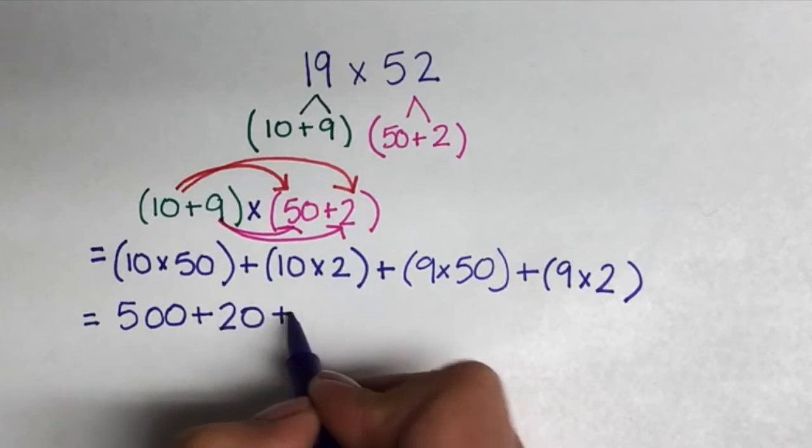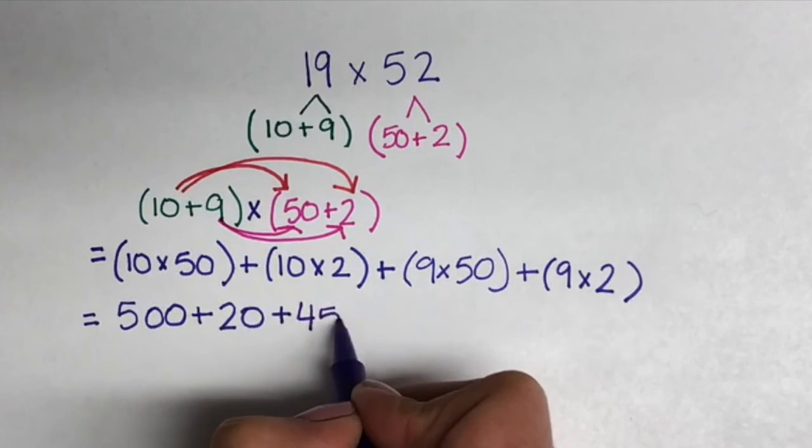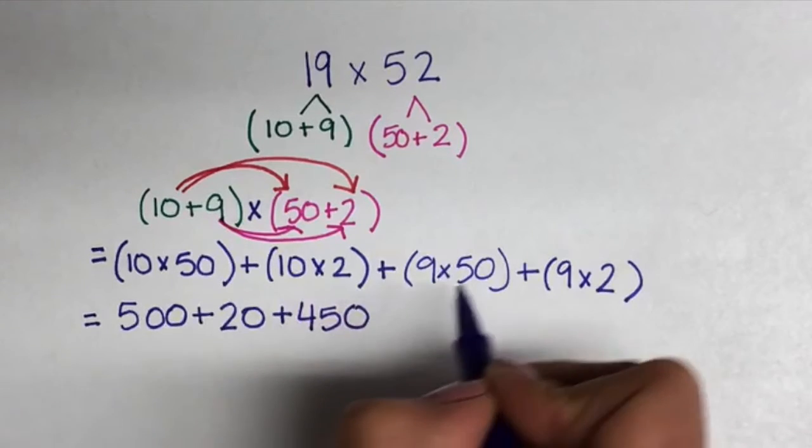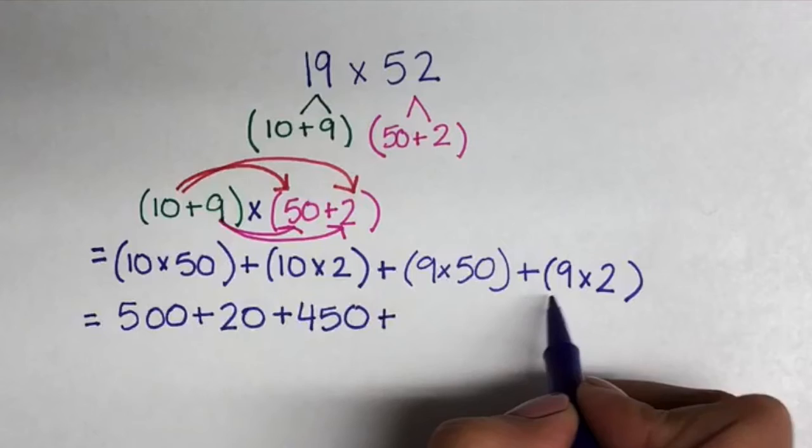Again, we're going to add. Our next partial product is 9 times 50, which equals 450. And lastly, 9 times 2, which equals 18.